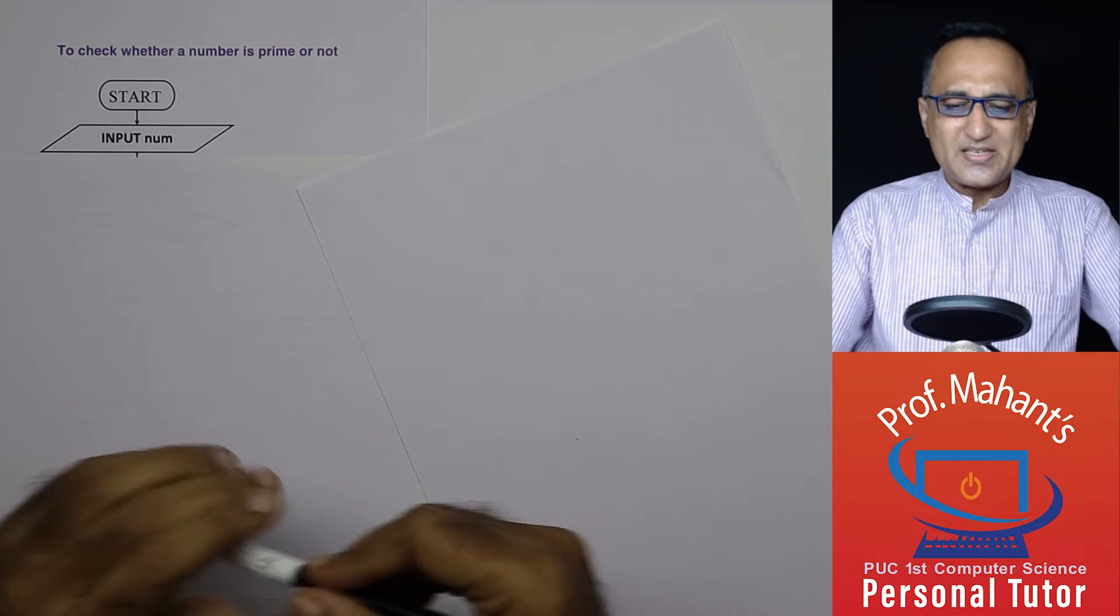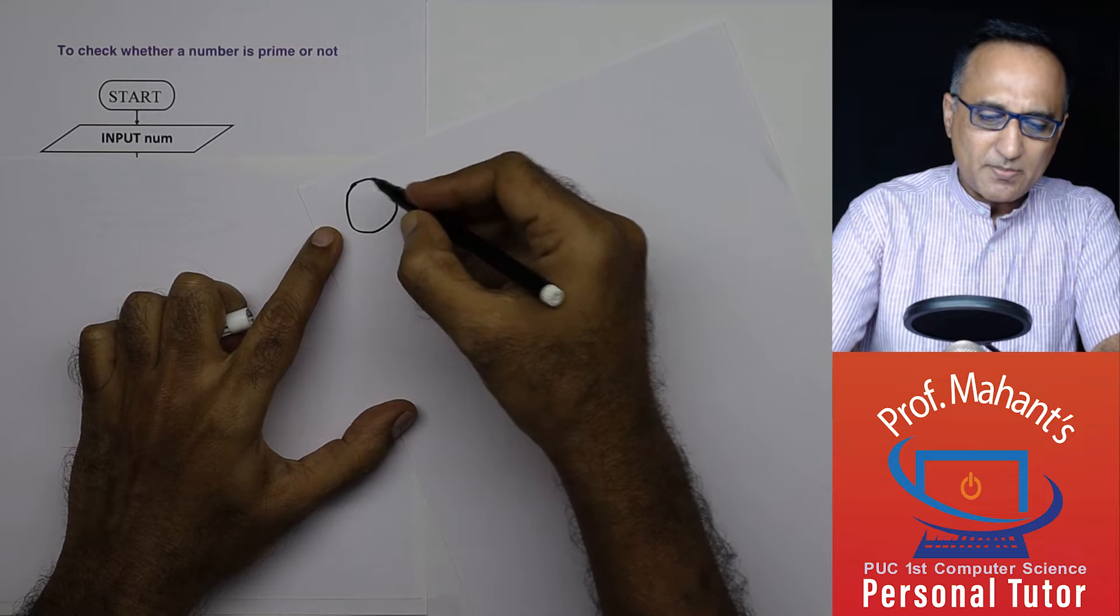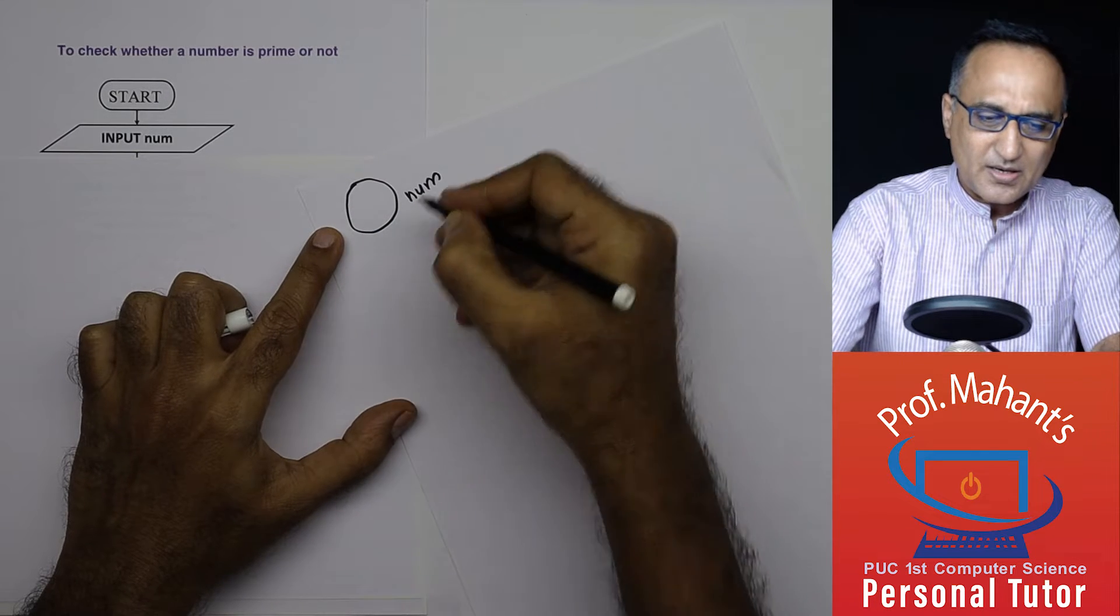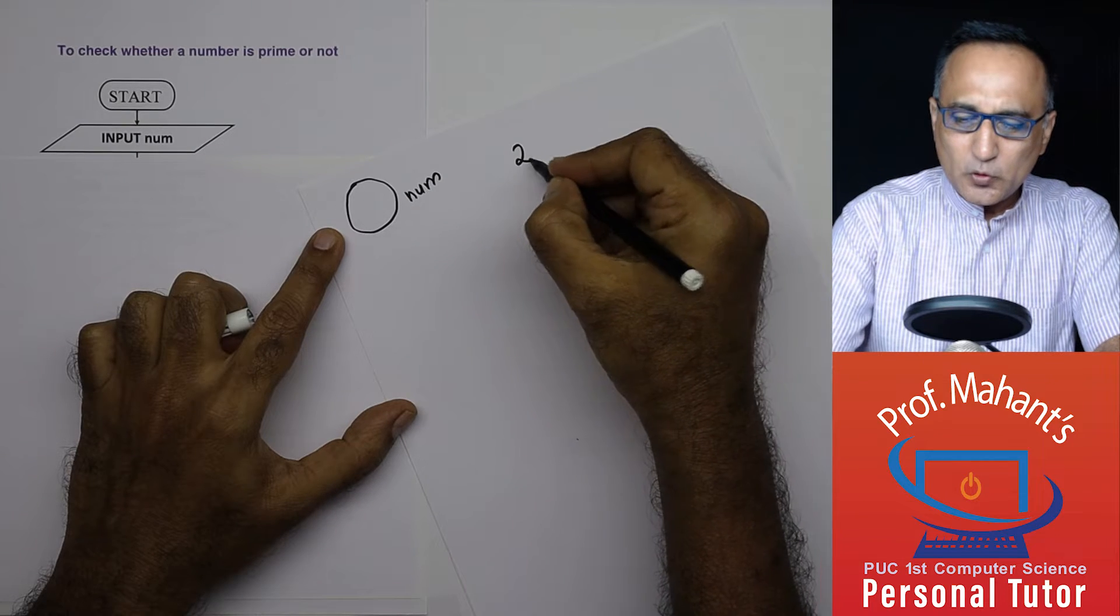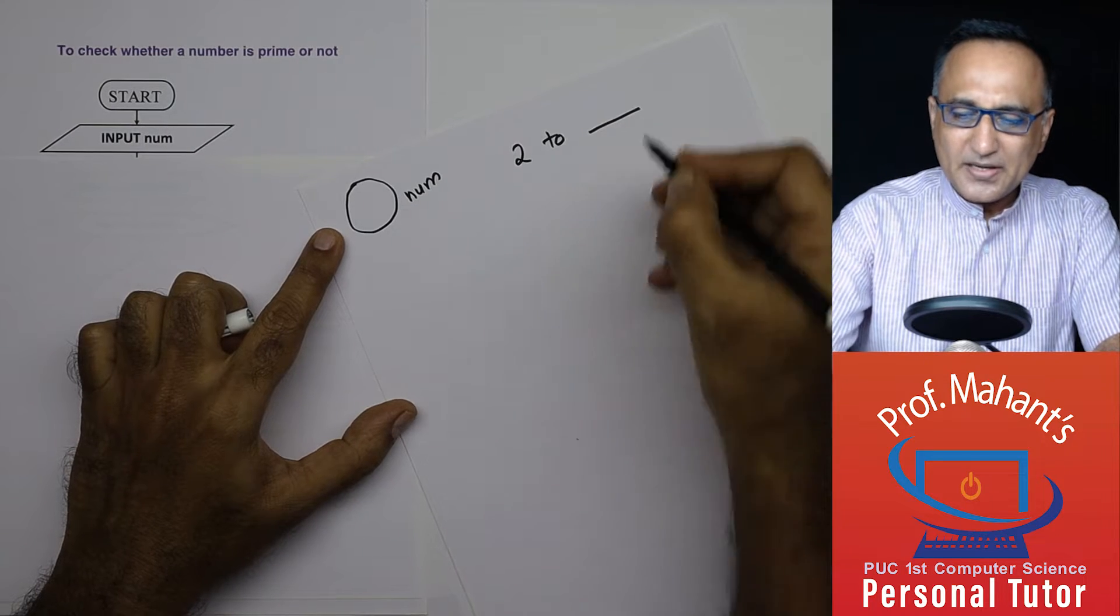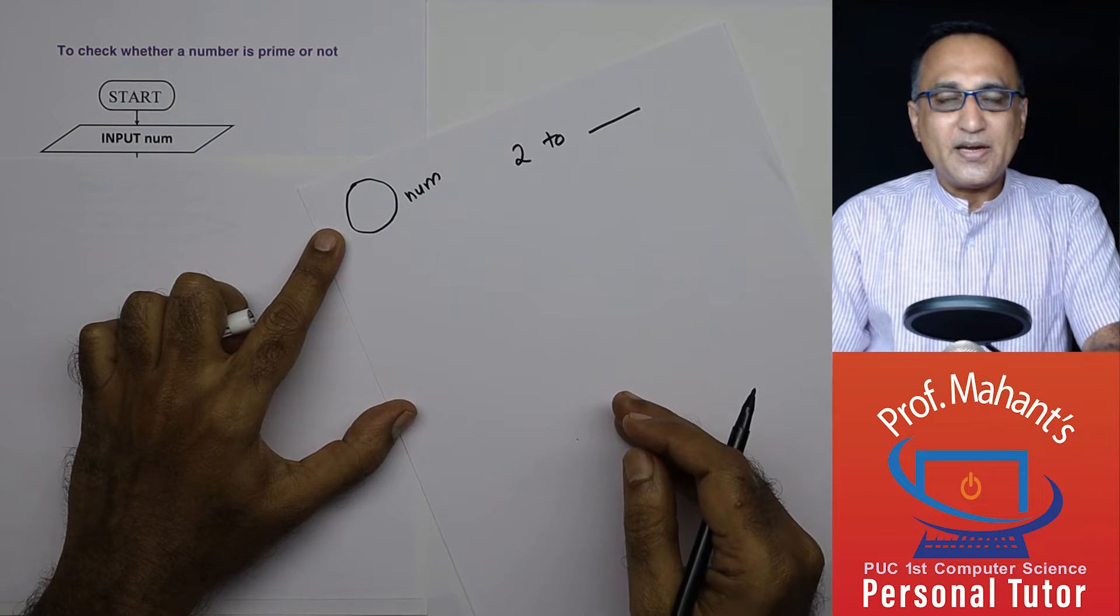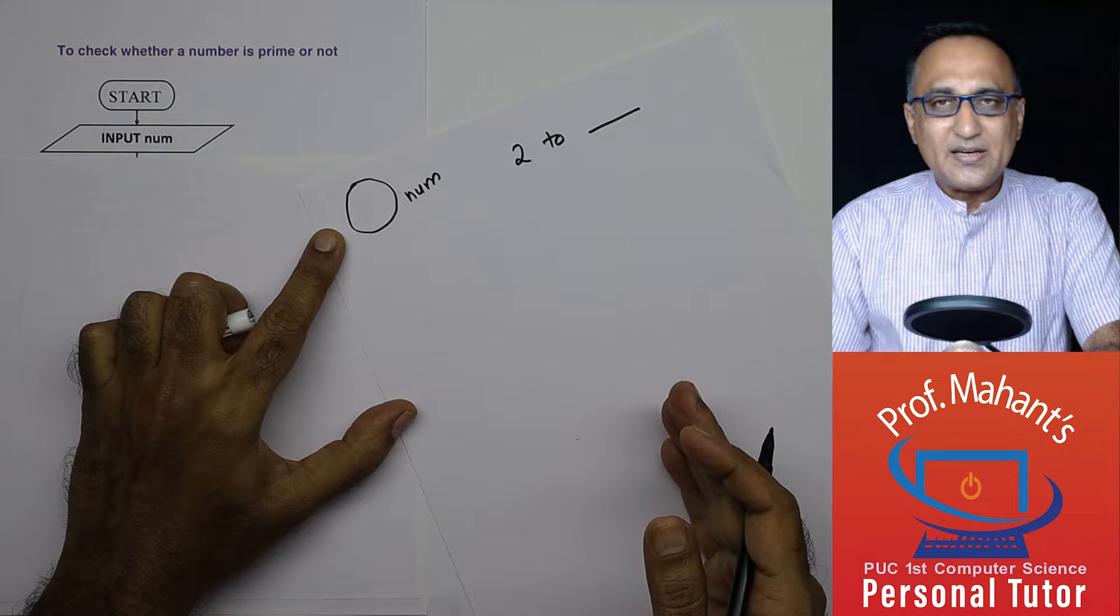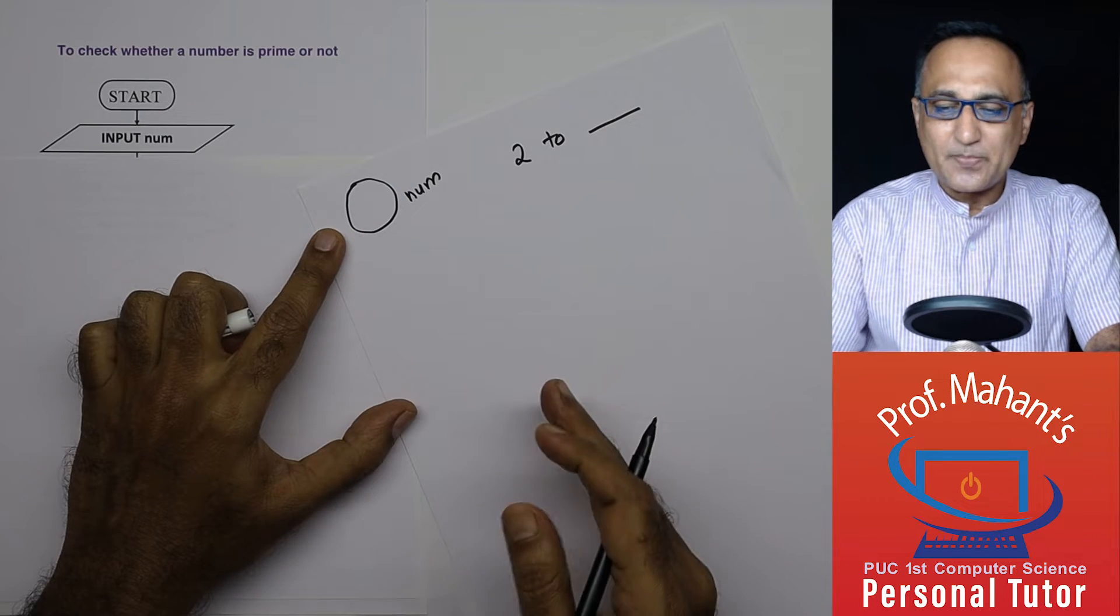We're going to use a very simple logic. First, I'm going to read into a particular memory location called num a number. Then starting from 2 till a particular point, I'm going to try to keep dividing this number. If it becomes divisible, then this number cannot be a prime number, else it's a prime number.